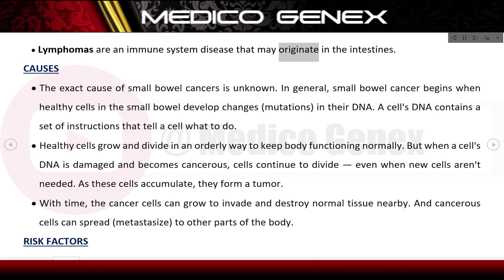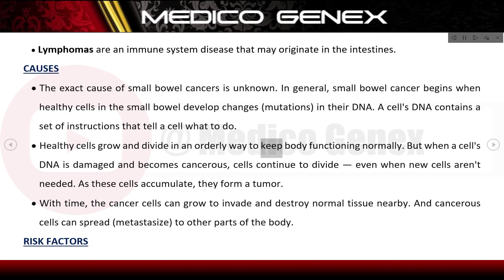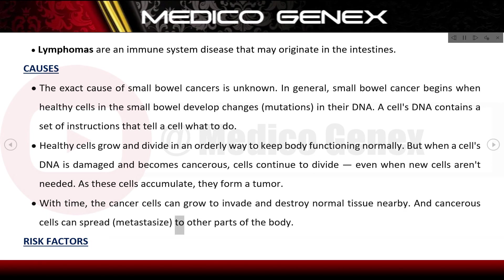The exact cause of small bowel cancer is unknown. In general, it begins when healthy cells in the small bowel develop changes — mutations — in their DNA. A cell's DNA contains instructions that tell a cell what to do. Healthy cells grow and divide in an orderly way, but when a cell's DNA is damaged and becomes cancerous, cells continue to divide even when new cells aren't needed. As these cells accumulate, they form a tumor, which can invade nearby tissue and metastasize to other parts of the body.